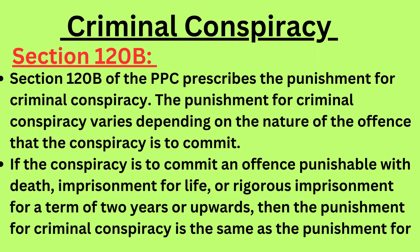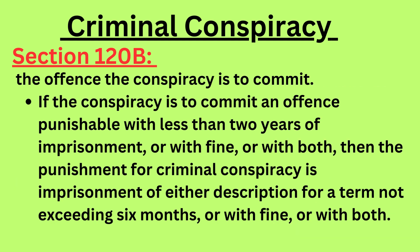Our next section is 120B, which is about the punishment for criminal conspiracy. The punishment varies depending on the nature of the offence the conspiracy is to commit. If the conspiracy is to commit an offence punishable with death, imprisonment for life, or rigorous imprisonment for two years or more, the punishment is the same as for that offence. If the offence carries less than two years, the punishment is imprisonment not exceeding six months, or fine, or both.